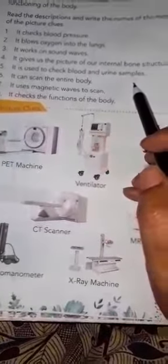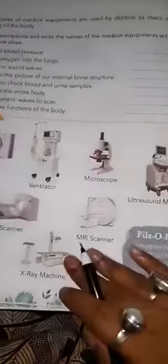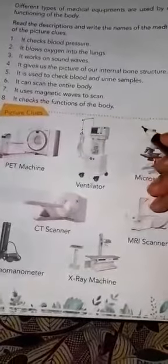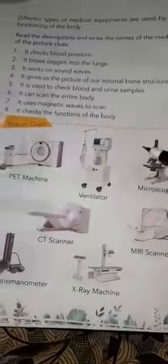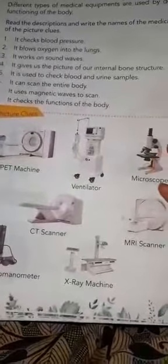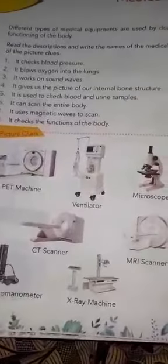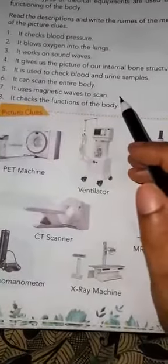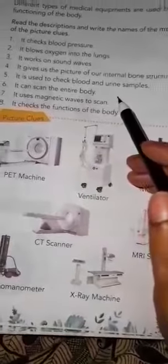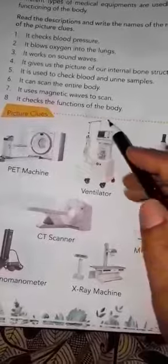The next clue: it is used to check blood and urine samples. You will have to find the correct answer, because this is a tricky question — you need to determine whether it will be a PET machine or an ultrasound machine. Find the answer from the clues provided.